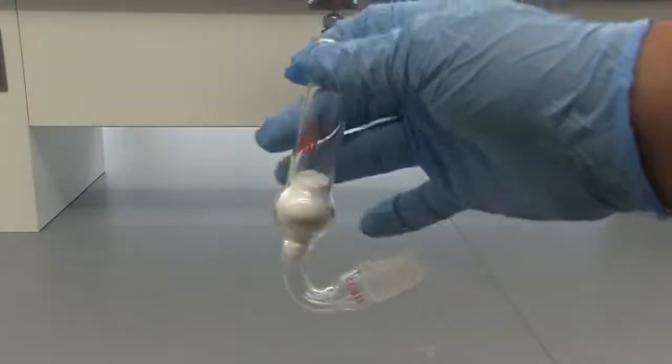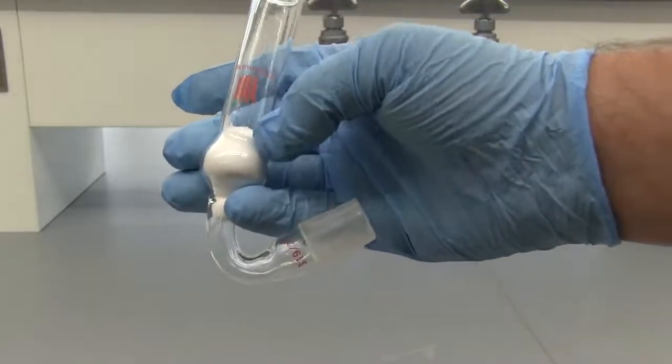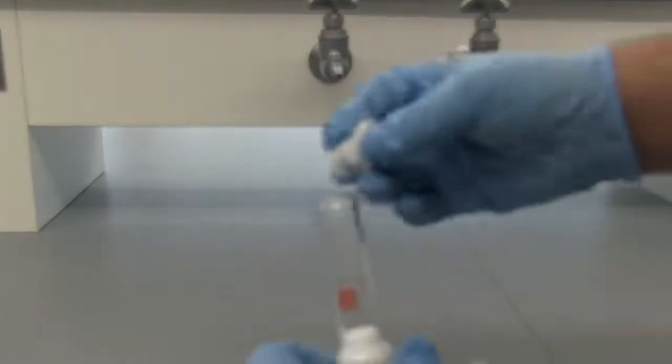All right, so we've got our calcium chloride powder in there. If you have the granulated, I'd fill it to about here or so. But since we have the powder, I'm just going to fill it to here. And now we'll take another piece of cotton and plug the top.